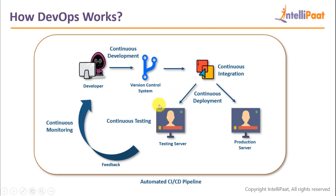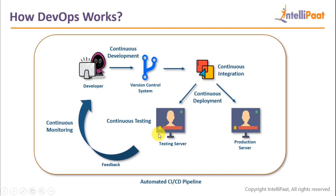What it does is take the code and build and test it on the testing server — this is called continuous testing. If there are 100 developers on the team, for every developer who pushes code to the version control system, the continuous integration software is going to test their code on the testing server. This is the reason it's called continuous — because it happens continuously.